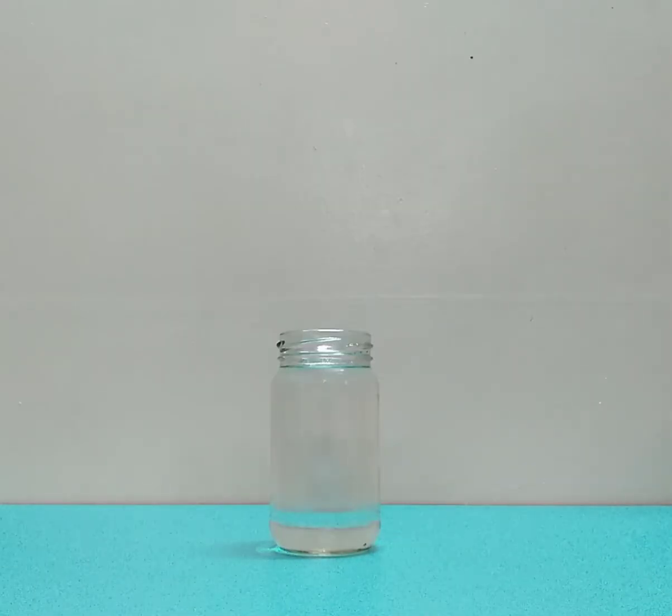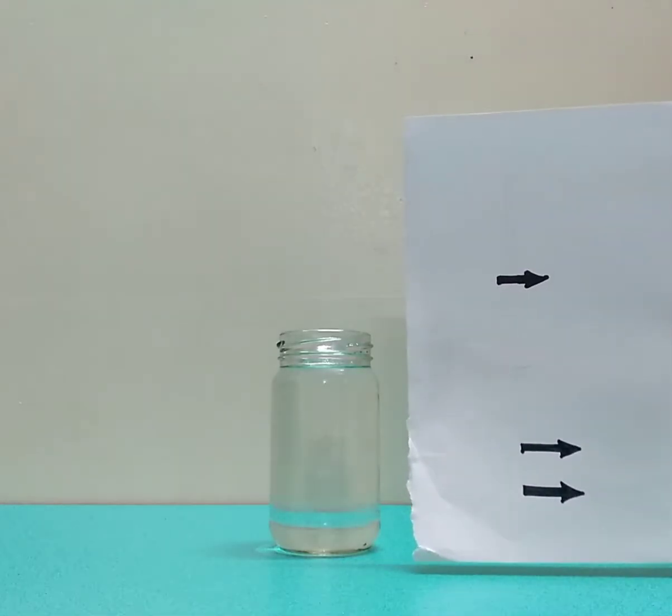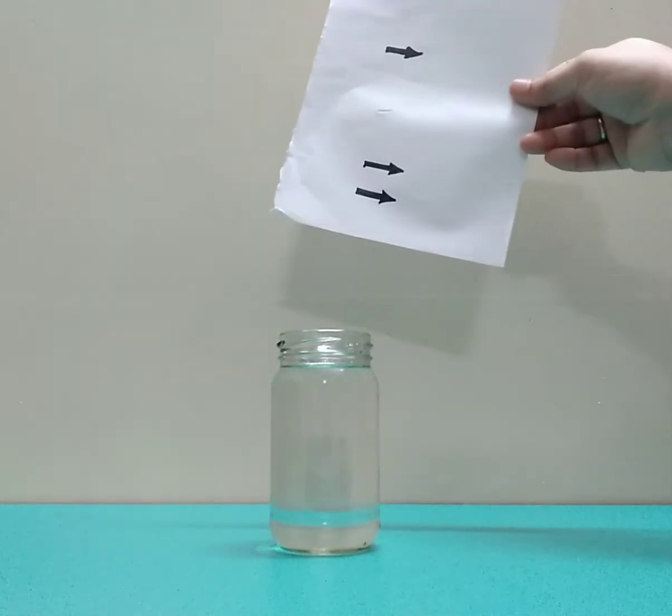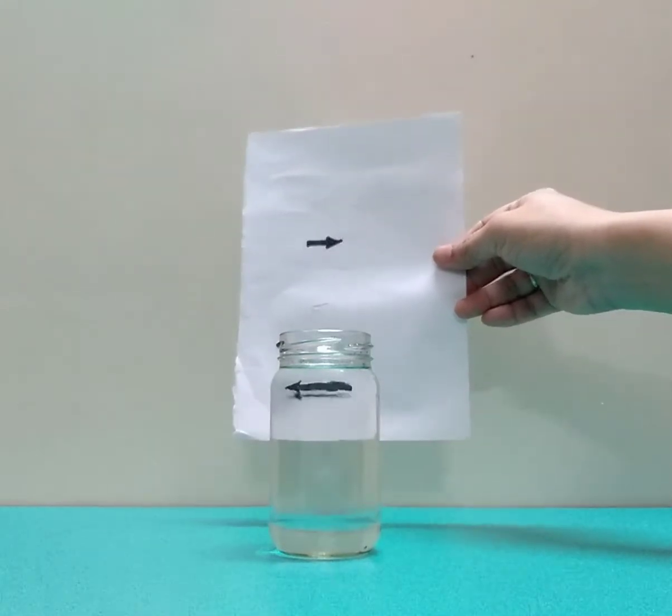So let's do this experiment. First, fill the glass with water to the top. Draw arrows on the piece of paper. Place the paper behind glass and see the magic.